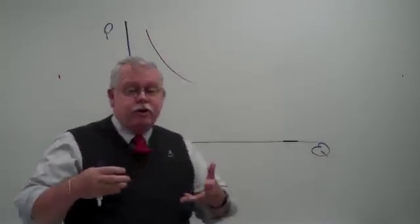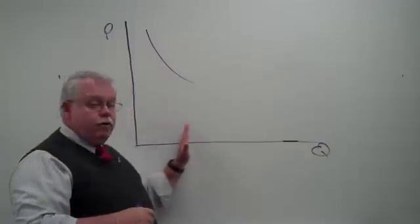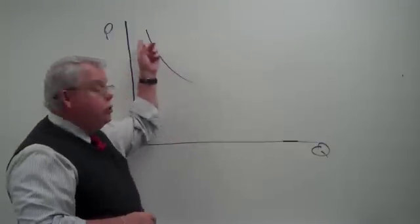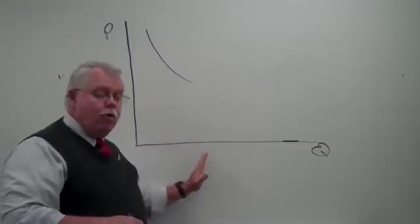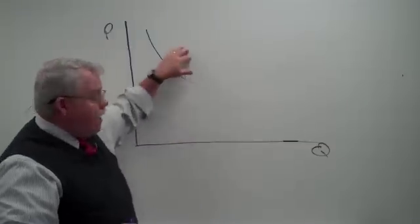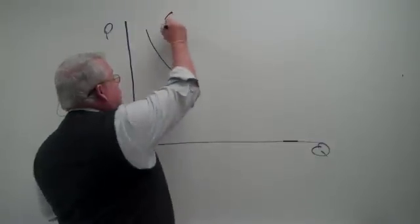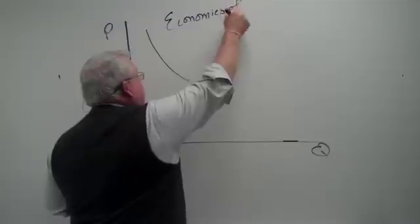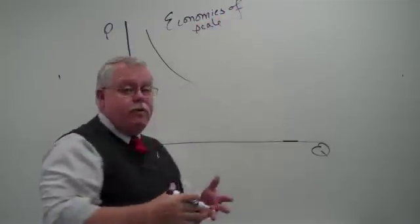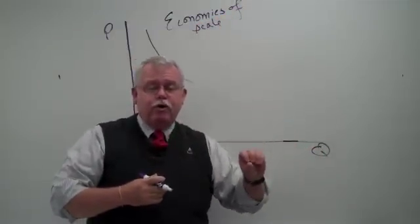The first part we mentioned was the average total cost curve that as you increase output, your cost per unit decreased. So it's cheaper per unit the more you produce. This first range we call economies of scale. You'll see that term frequently in economics. It simply means the more you do with something, the cheaper you can do it.